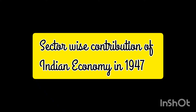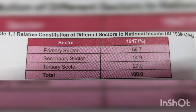Let us now have a look at what was the situation of the Indian economy, or what was the contribution of various sectors at the time of independence. So in 1947, the various sectors of our economy — that is, primary, secondary, and tertiary sectors — their contribution can be understood from the following table. We can see that the primary sector was the most contributed sector, contributing near about 58.7 percent to our national income.